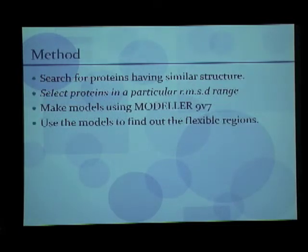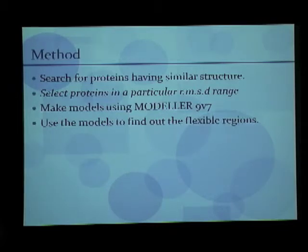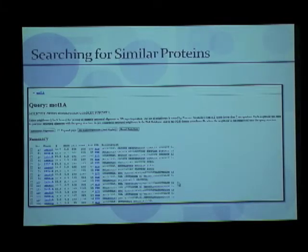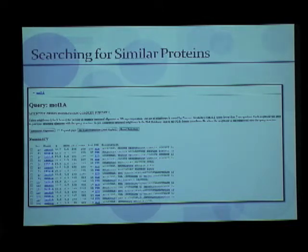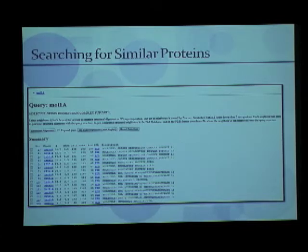The method I used: first, I search for proteins having similar structure. Then I select proteins in a particular RMSD range. Then I use a program called Modeler to make around 20 models. After that, these models are used to find out the flexible regions, which are then compared against observed flexibility and scored. For searching similar proteins, this is a snapshot of an online software called DALI. What DALI does is perform a multiple structural alignment of a particular protein — you input the PDB ID and it gives out a list of many different proteins.